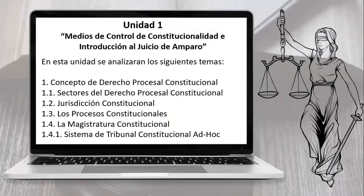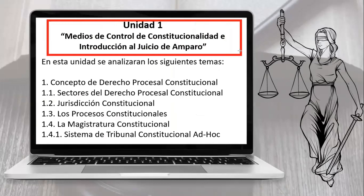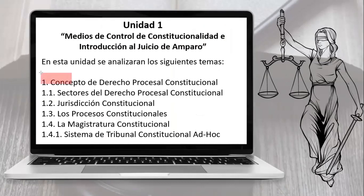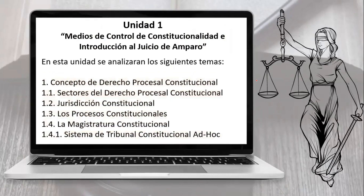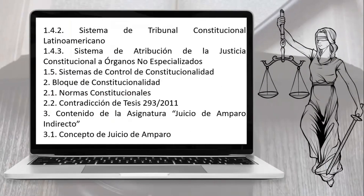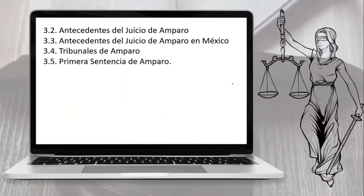Amparo indirecto. La primera unidad va a versar sobre los medios de control de constitucionalidad y el juicio de amparo. Vamos a ver qué es el derecho procesal constitucional, los sectores del derecho procesal constitucional, la jurisdicción constitucional, los procesos constitucionales, la magistratura constitucional, los sistemas de tribunales constitucionales. Vamos a hablar de la atribución a órganos especializados, a órganos no especializados, los distintos sistemas de control de constitucionalidad, el bloque de constitucionalidad, normas constitucionales, contradicción de tesis 293/2011, y el contenido de la asignatura del juicio de amparo: concepto, antecedentes, tribunales de amparo y la primera sentencia de amparo. Todo esto vamos a analizarlo en esta primera unidad.